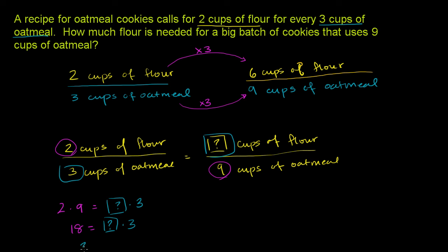So the unknown needs to be equal to six cups of flour — the same answer we got through common sense. Now you might be wondering why cross-multiplying works. Why does it work that if I take the denominator here and multiply it by the numerator there, that needs to equal the numerator here times the denominator there? That comes from straight-up algebra. I'm going to rewrite the unknown as x just to simplify the writing.